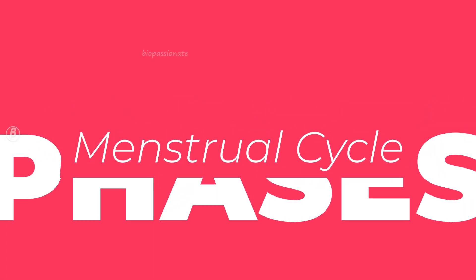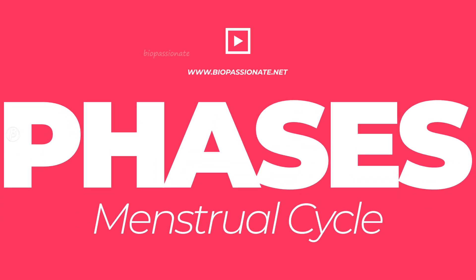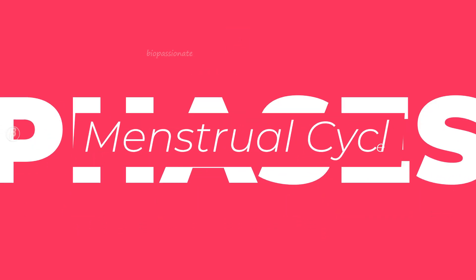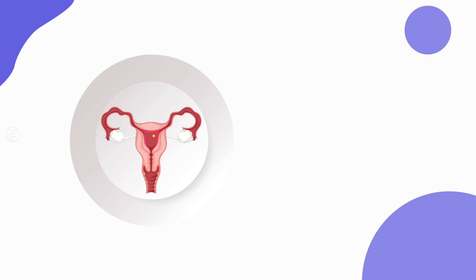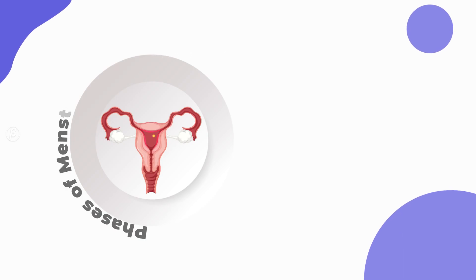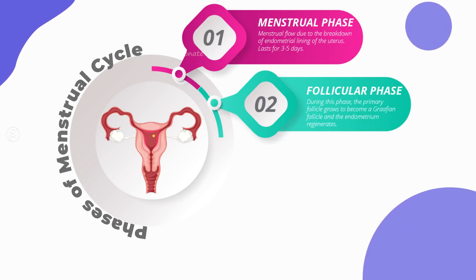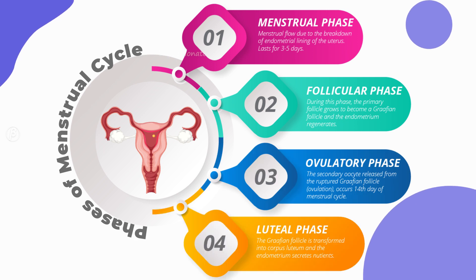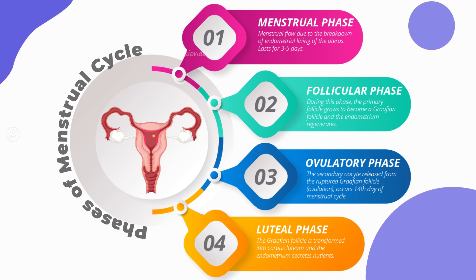Now let's talk about the phases of the menstrual cycle. The menstrual cycle has four phases: the menstrual phase, the follicular phase, the ovulatory phase, and the luteal phase.